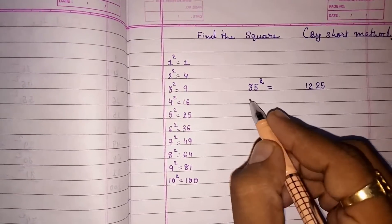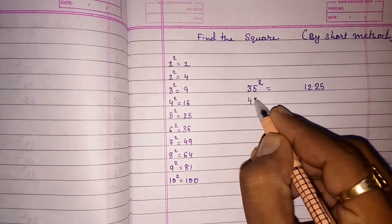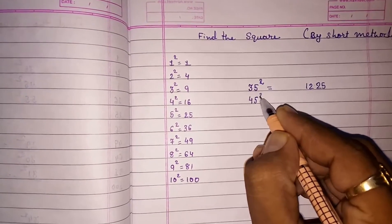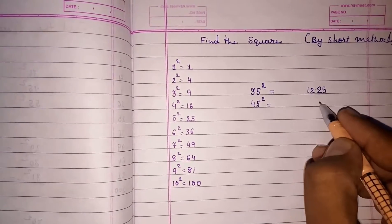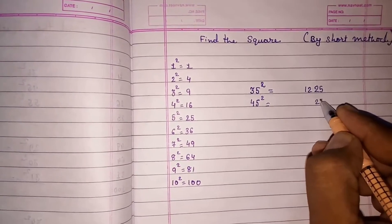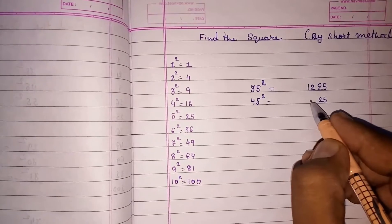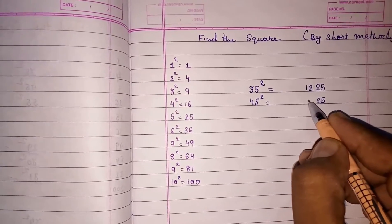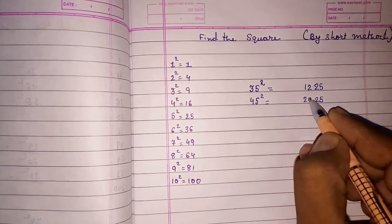Similarly, taking the next example: 45 square. The square ends in 25, and we multiply 4 with its consecutive number 5. 4 into 5 gives you 20.